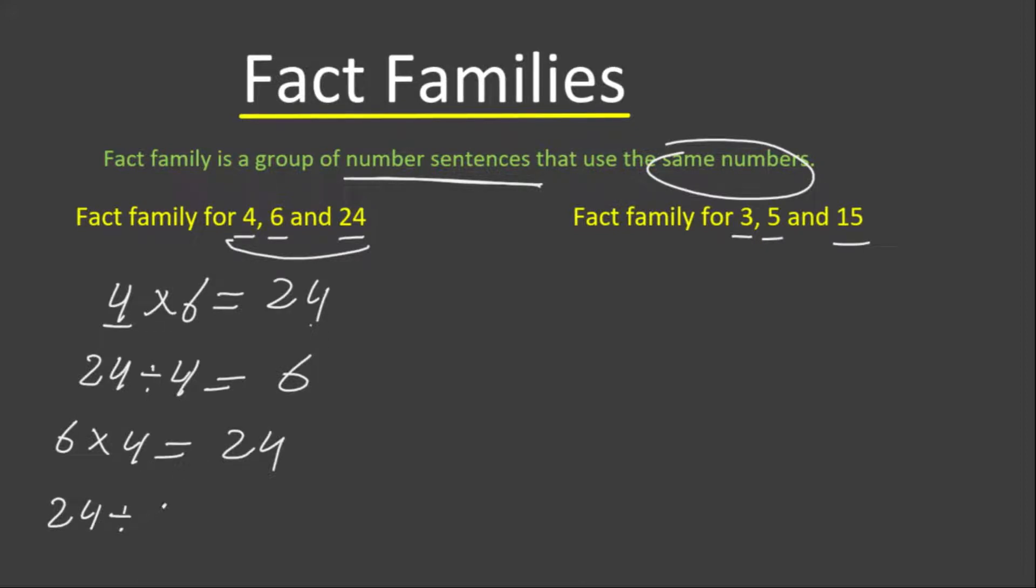At the same time, if we divide 24 by the other factor, in this case we will divide by 6, we will get the other factor which is left. So 24 divided by 6 is 4. This is how we use fact families to show the relationship between multiplication and division.